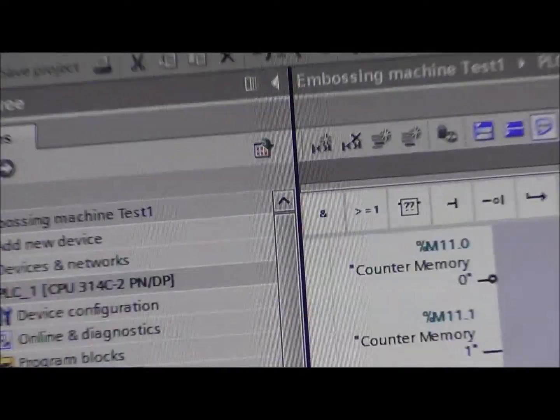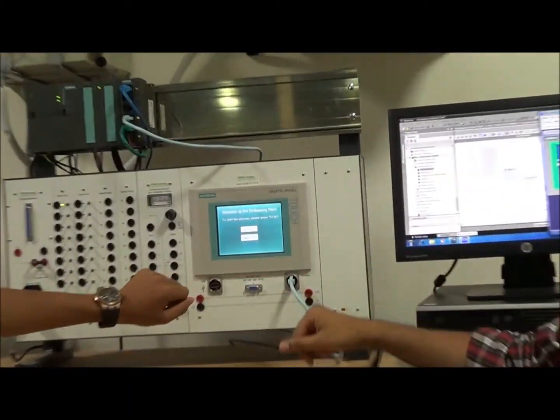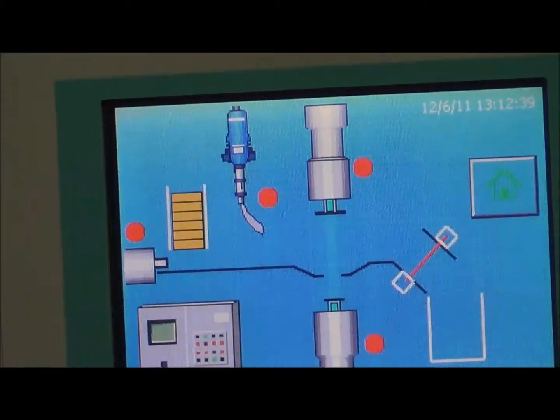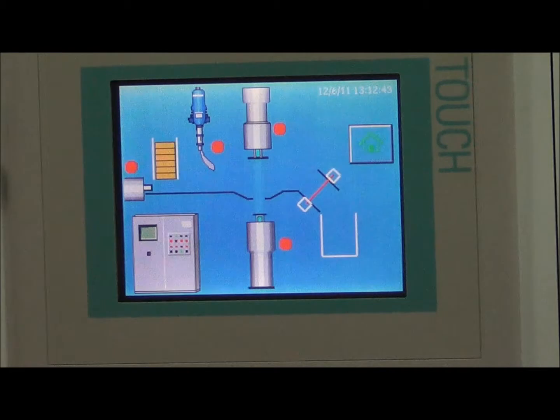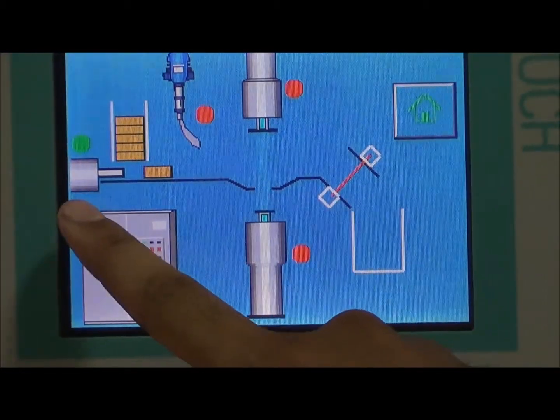Now, to begin explaining the process, this is the welcome screen. Now we move on to the process screen. Once the operator starts the process, a sensor placed under the stack will activate the striker.